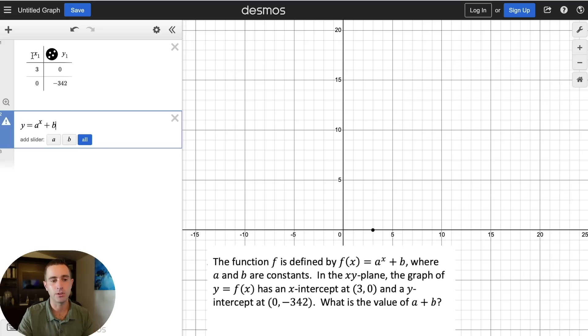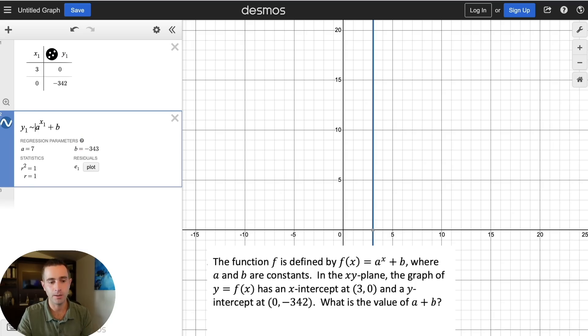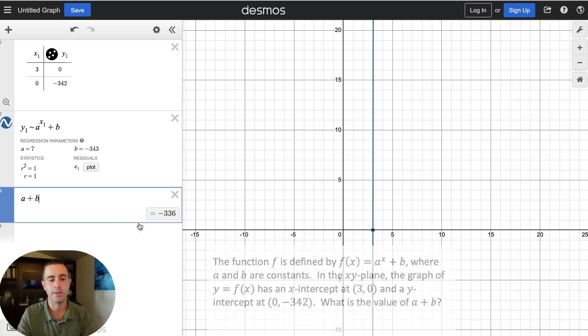The function is defined in this form of f of x equals a to the x plus b. Because the table is in terms of x1 and y1, we're going to have to rewrite our x's and y's in terms of that. So we'll do y1 and x1. But when we do this, it's still not going to solve for a and b. We need to simply use this little tilde button, and then it's going to solve for a and b. And if we're looking for a plus b here, you can actually simply just type in a plus b, and it's going to spit out your correct answer.